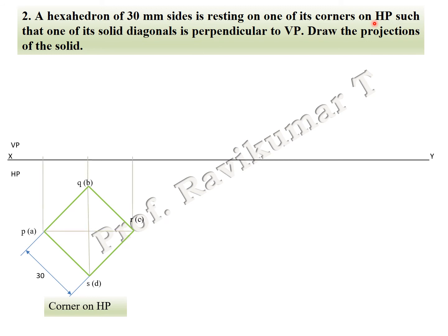Draw projection lines upward. If you are looking from the top of the object, it looks like a square, but if you are looking from the front, it looks like a rectangle — not a square — because it is a corner position. The side is 30 mm and height is 30 mm, but the width is more because it is a corner position. Naming is done. This completes the first position.